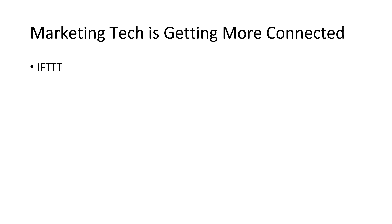There is an application called IFTTT — If This, Then That. Basically, all that is, is something that connects two applications. There are now applications like IFTTT and Zapier — maybe you've heard of it, maybe you haven't — but Zapier connects those other applications together. There are also web-based services like Wufoo and JotForm that create forms and connect these services. All of these things that used to take three or four different steps can now be connected all together.